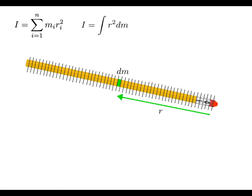How are we going to use this formula? From calculus, you can't integrate r² dm directly because dm needs to be in the form dr. So we apply the ratio trick: comparing the mass of that little green bit dm to the total mass M equals the length dr divided by the total length L. In other words, dm equals (M/L) dr.